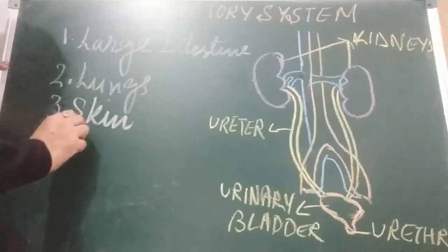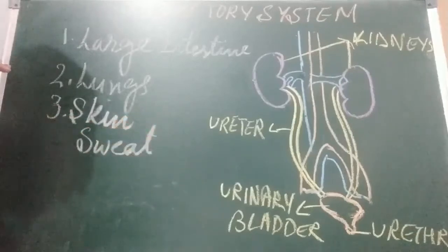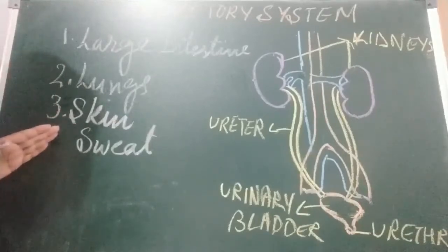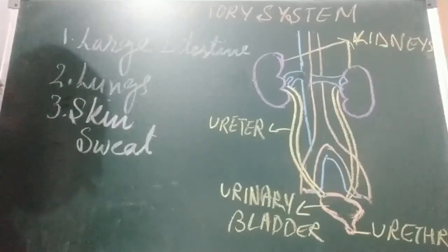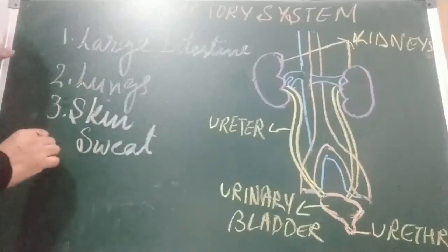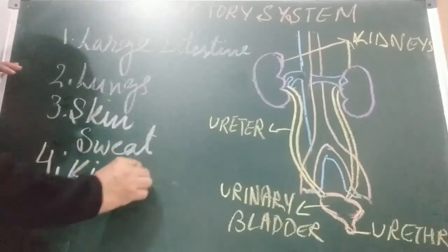Sweating is important in two ways. First, it helps remove excess water, some salts, and urea as liquid waste from the body. Second, it maintains our body temperature — it helps keep our body cool during summers. Fourth excretory organ: the kidney. We are going to discuss kidneys in detail.